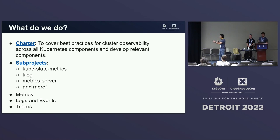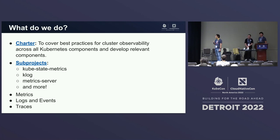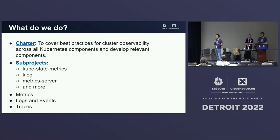Let's go over the charter. The charter is basically to cover best practices for observability across Kubernetes components. While we don't own individual metrics, we own the practices, format, and tools that people use to instrument Kubernetes components like the Kube API server, the scheduler, controller manager — all of the things you are familiar with.